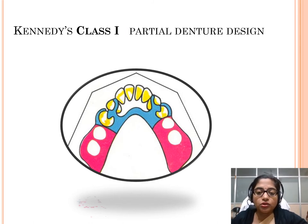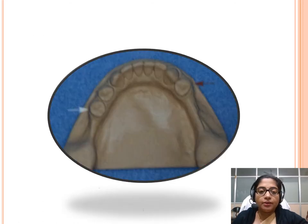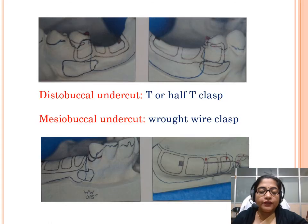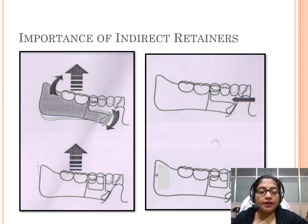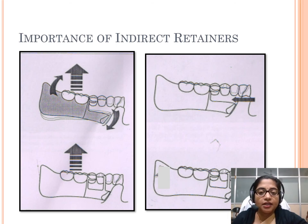Looking at individual cases: for Kennedy's Class 1 partial denture design, we have terminal abutments — in this case two premolars. After surveying and determining the location of the undercut, a distobuccal undercut can have a T or half-T clasp, and a mesiobuccal undercut can have a wrought wire clasp. Rigid reciprocal units are then planned. Indirect retention is another important step, providing stability against dislodging forces, and it is placed as far anteriorly as possible.